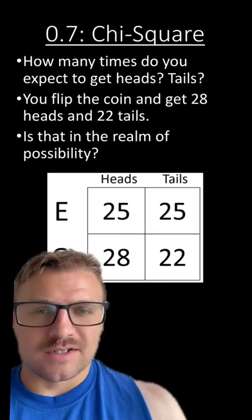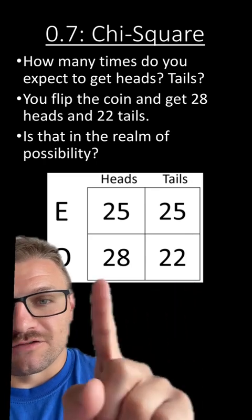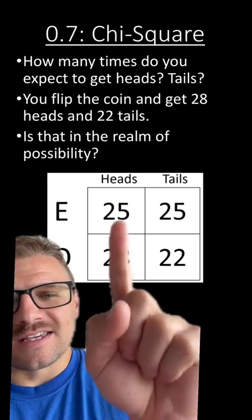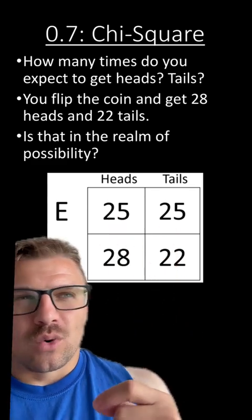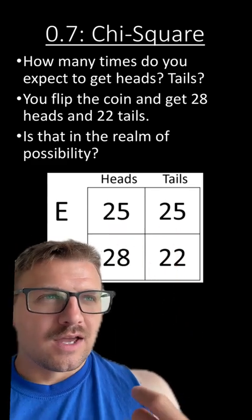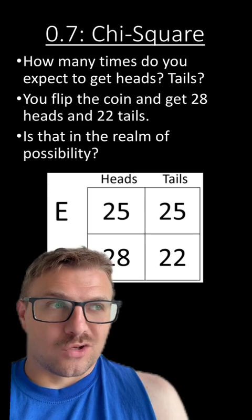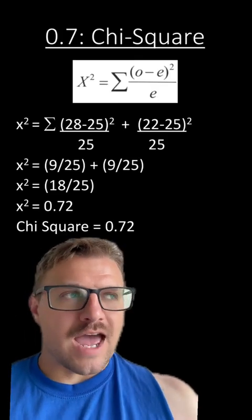So all the chi-square does is it looks at our observed values and our expected values and says, hey, is this in the realm of possibility or is some other variable affecting the outcomes of this experiment? For instance, is the coin weighted?